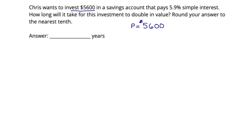We also know that this account pays 5.9% simple interest. That means we have an interest rate, or R value, of 0.059 — we either divide 5.9 by 100 or move the decimal two places to the left to get 0.059.